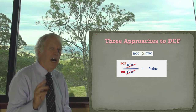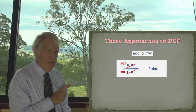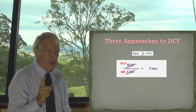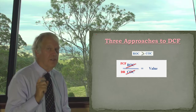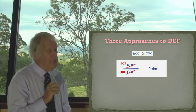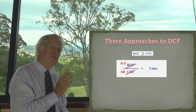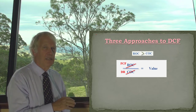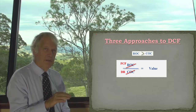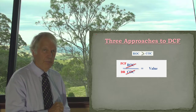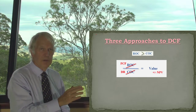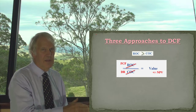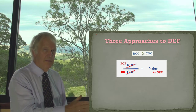Remember: the higher the volatility risk of that free cash flow, the higher the discount rate should be — the higher the return that I should want. Conversely, if it is a relatively stable, non-volatile free cash flow, it will be a lower discount rate. This then produces the value — net present value, NPV.